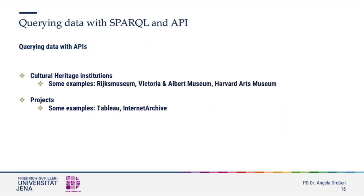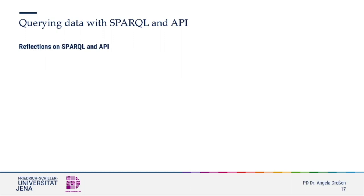Another variety of cultural heritage institutions and projects offer their data for an API query. Not needing a computer language, this query method is easier to learn than a SPARQL query. But you still need to know about the vocabularies the institution has made available, and each endpoint also has its own characteristics. For the time being, most of these endpoints — either SPARQL or API — have their own set of rules, although there are now investigations into sharing endpoints among a variety of providers. We will come back to this later.